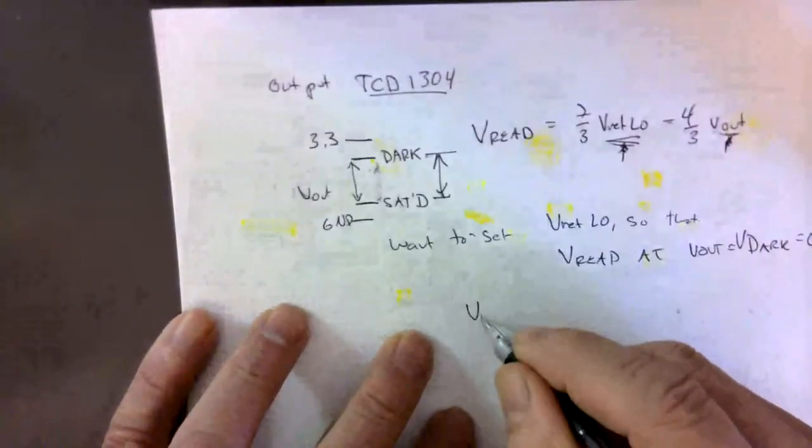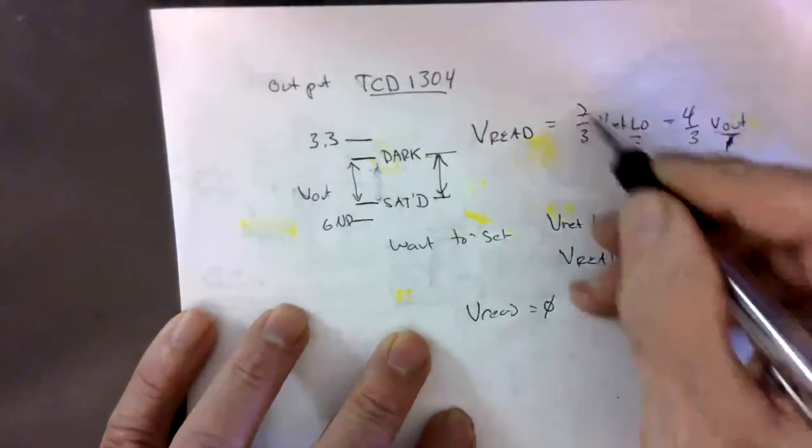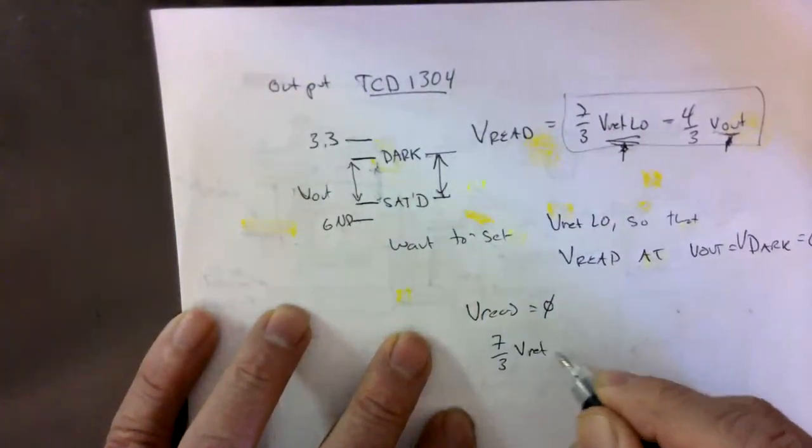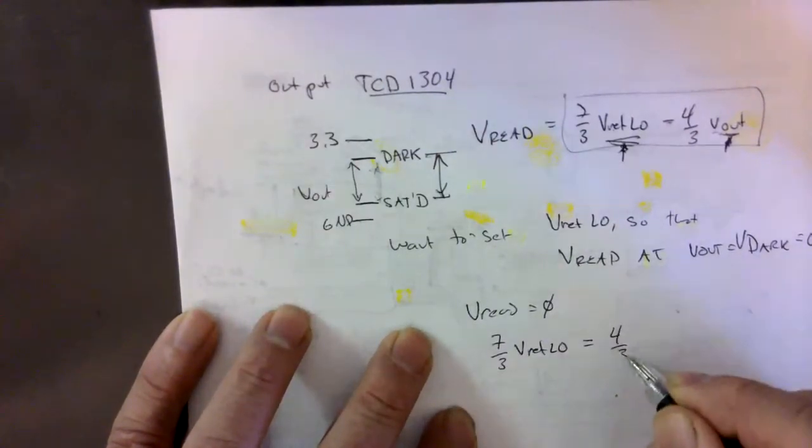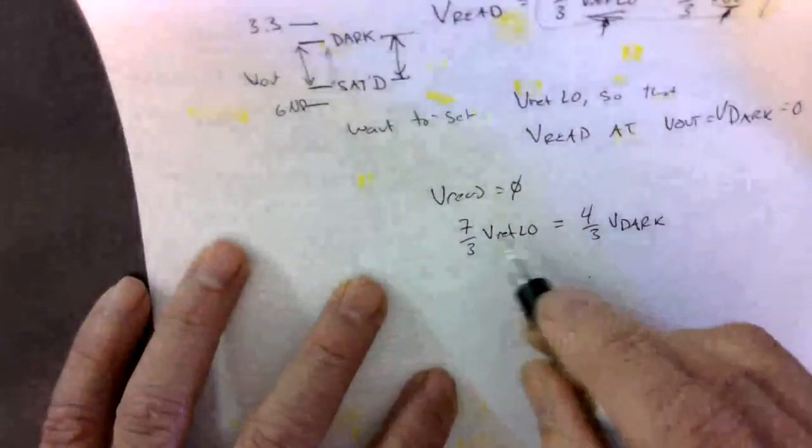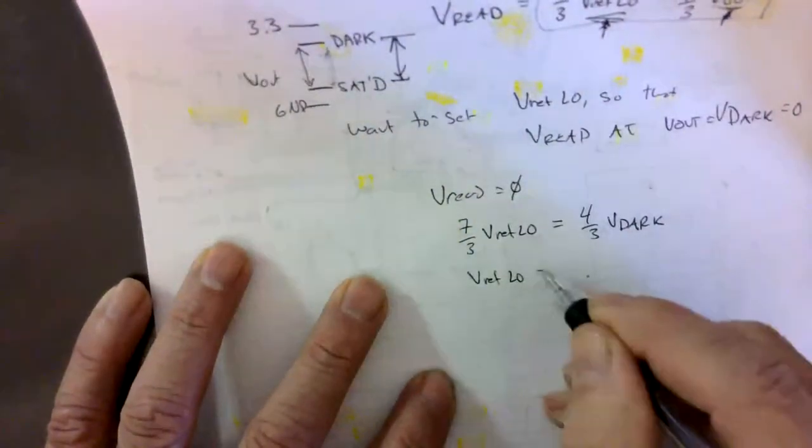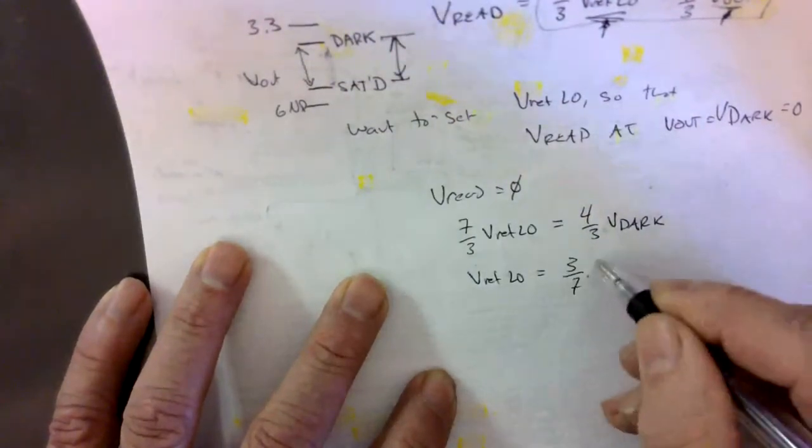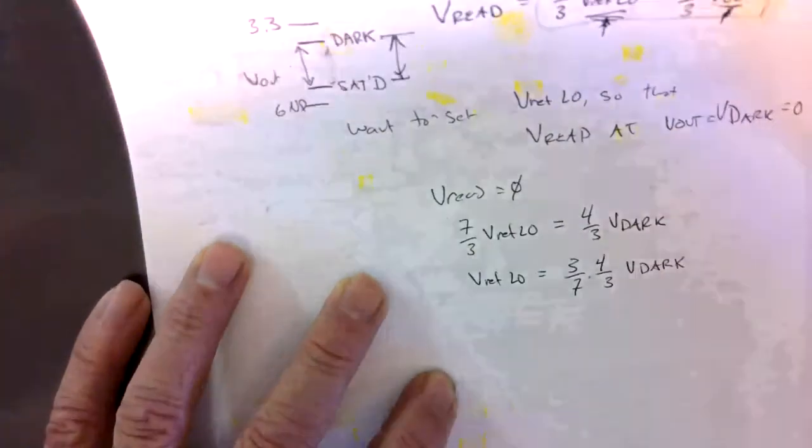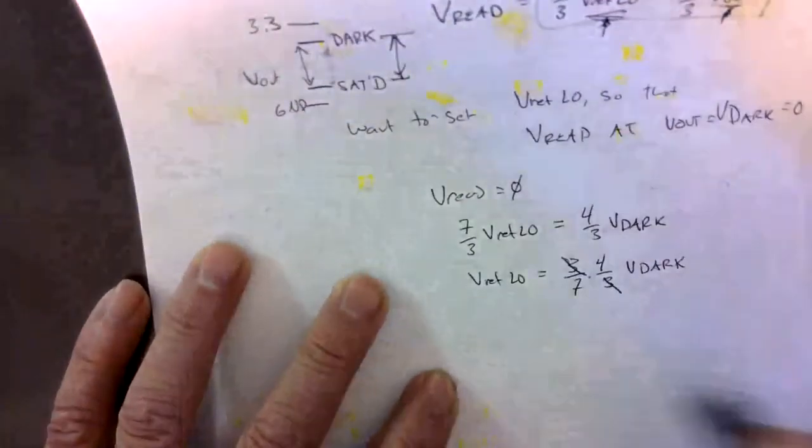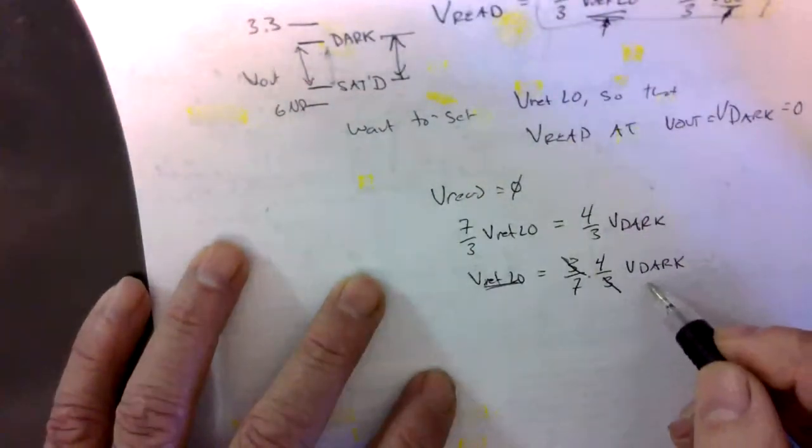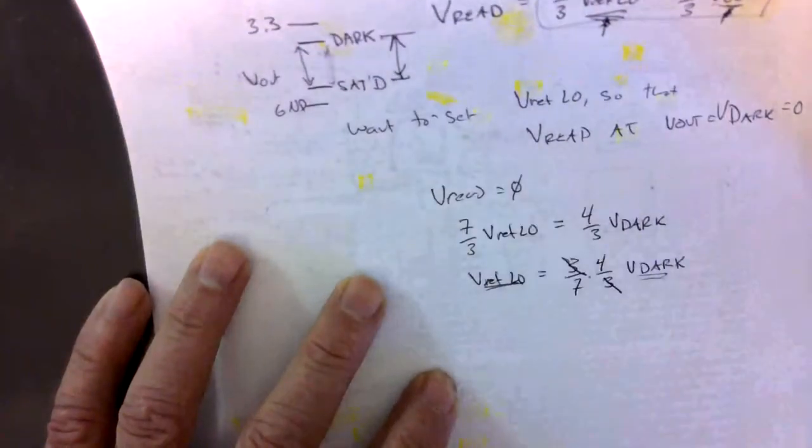So if we take V read and set that to zero and solve for V ref low, what do we get? We have 7 thirds times V ref low equals 4 thirds times V dark. That gives us a voltage for V ref low that we can input into our teensy, which gives us zero for the V dark.